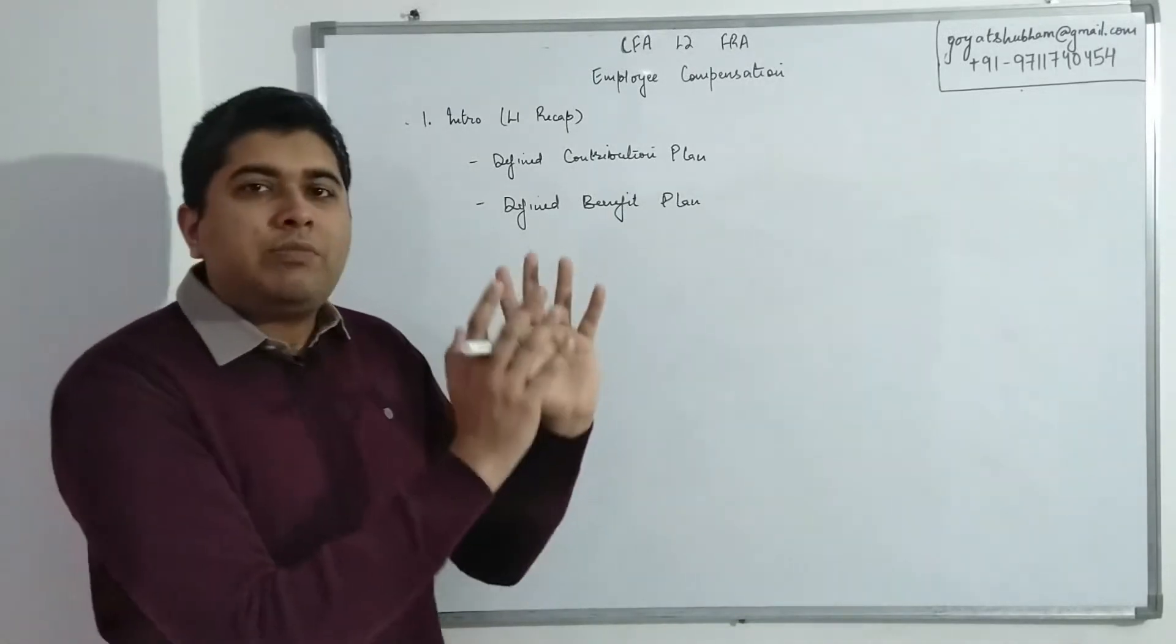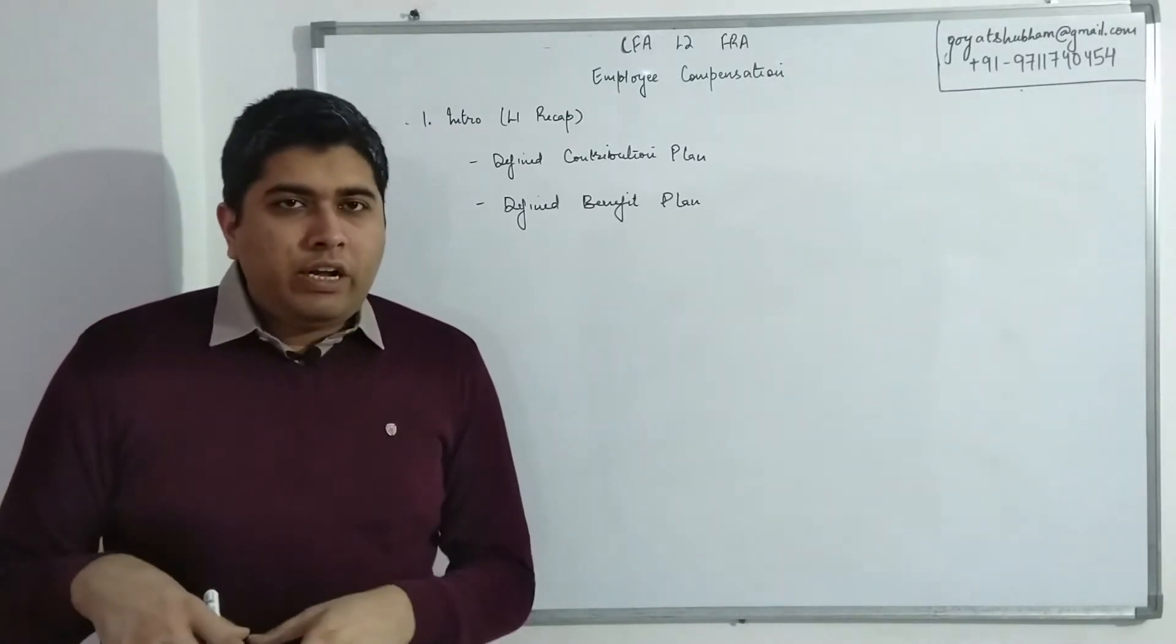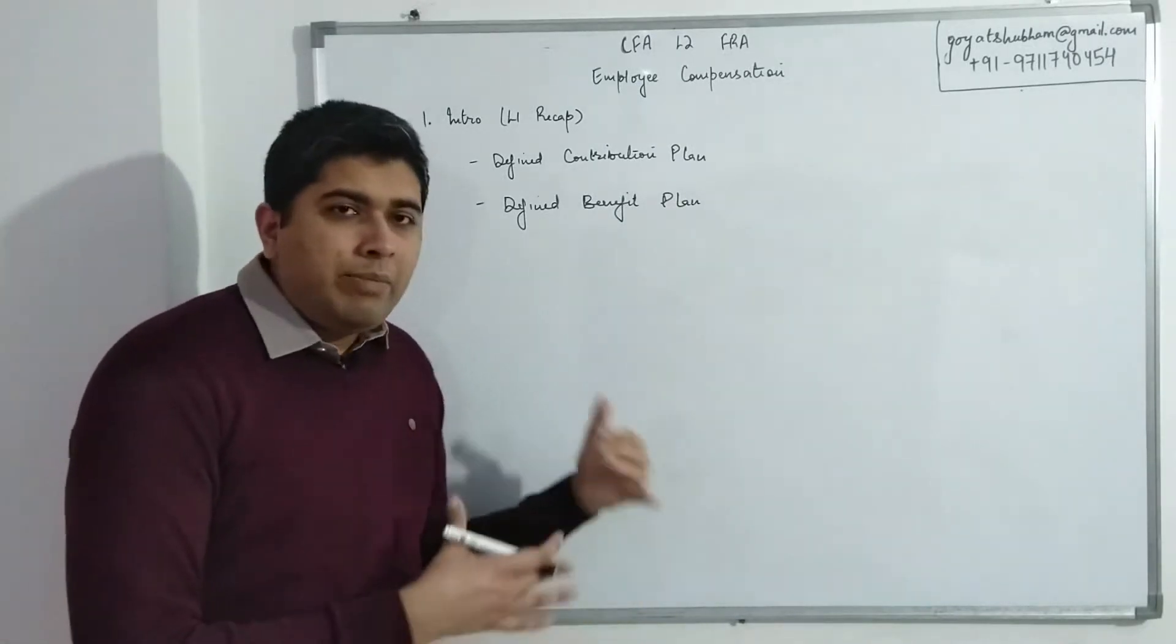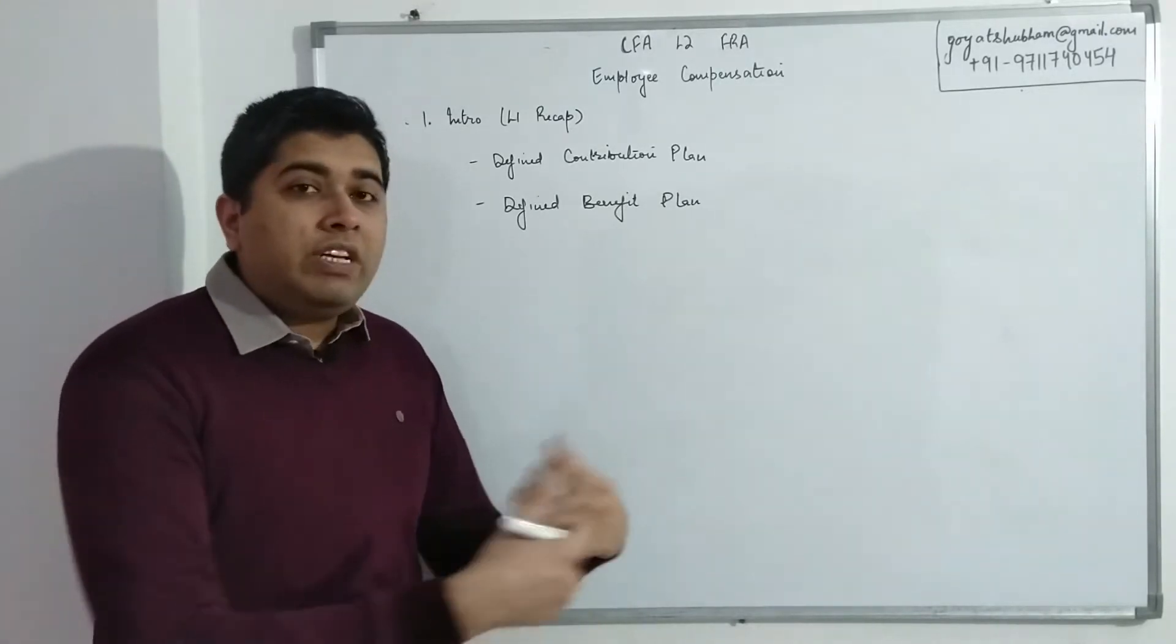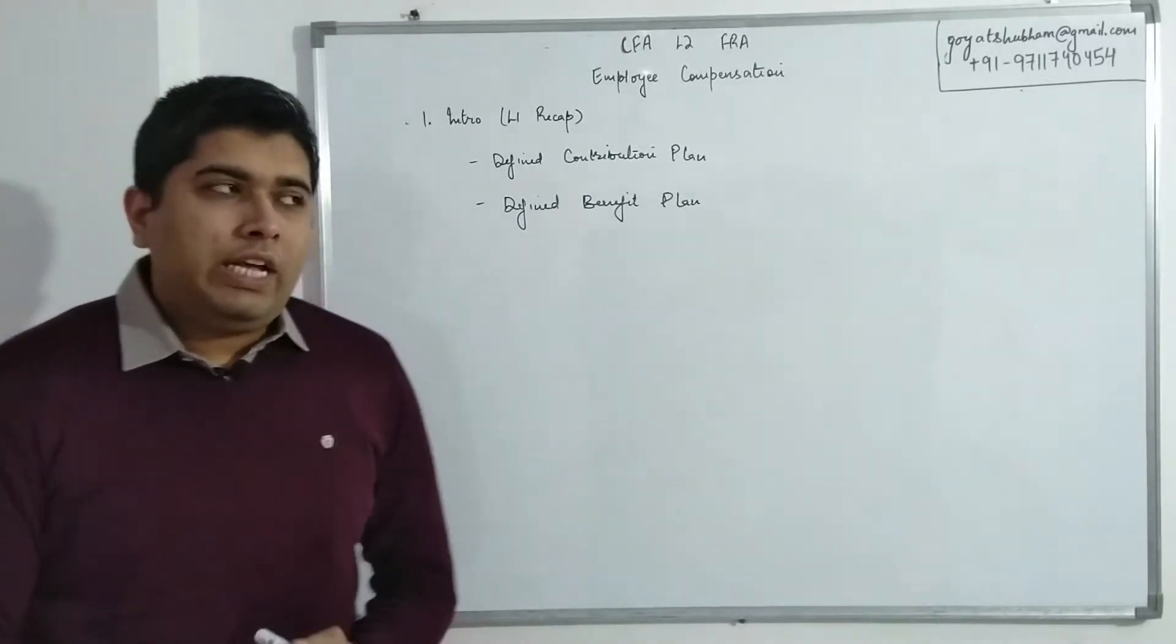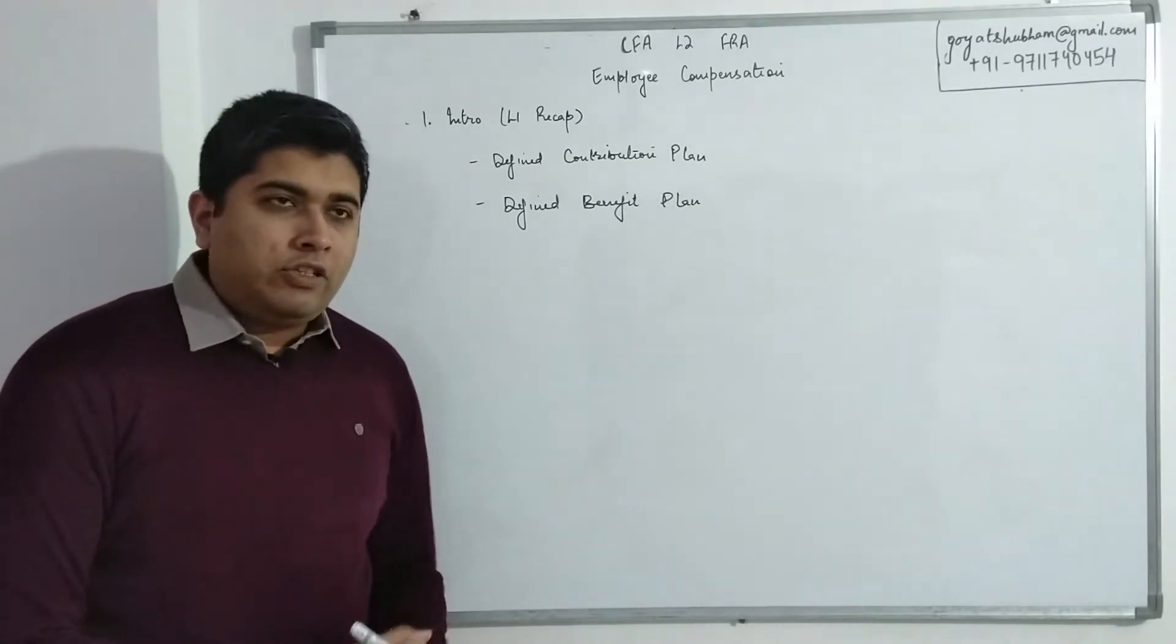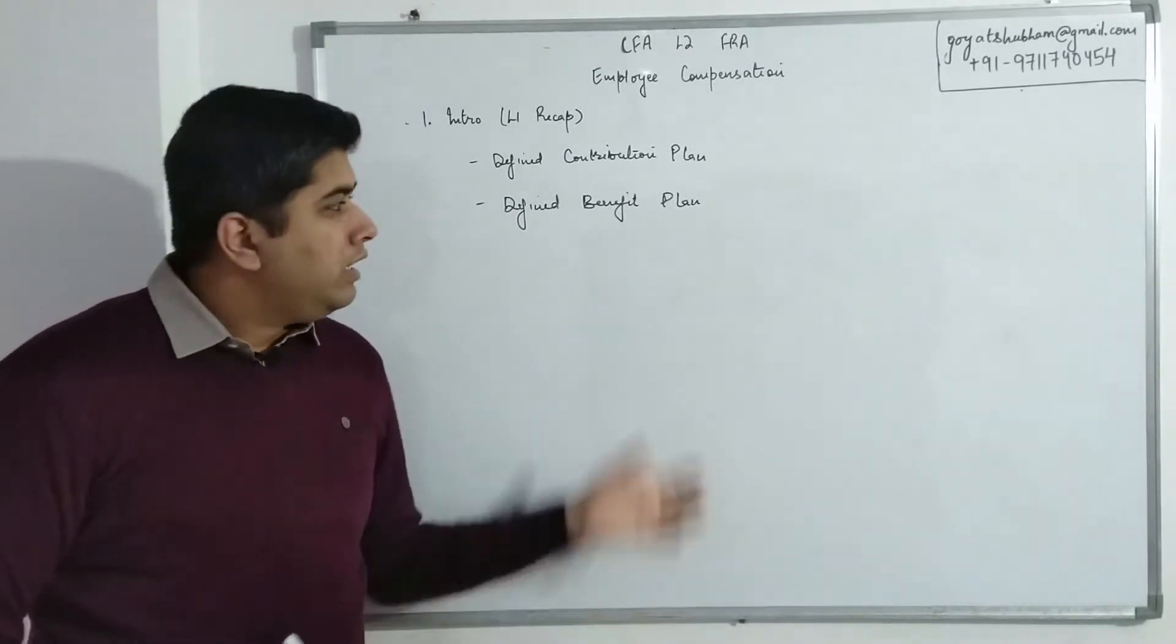So as such, in Defined Benefit Plan things get a little complicated because one part of the entire concept is to estimate how much money I probably be paying once the employees start retiring. So estimating how much money you might need, that's one side of equation. The second part of the equation is how should I manage my investments right now so that when I need the money to make pension payments, I have that money available with me. Because effectively company will not just start keeping cash every year. If you keep idle cash it loses value, so company will set aside some funds and then invest them such that those returns are also adding to the company's benefit pool.